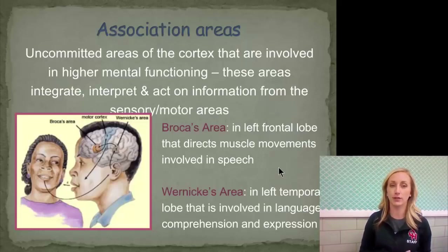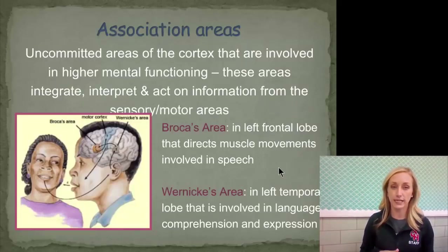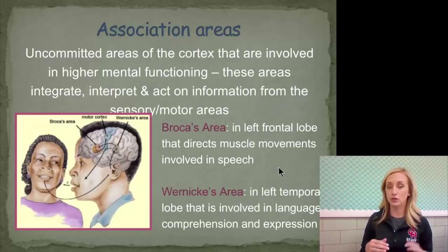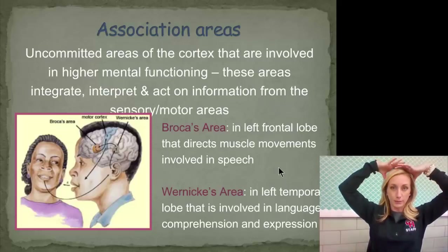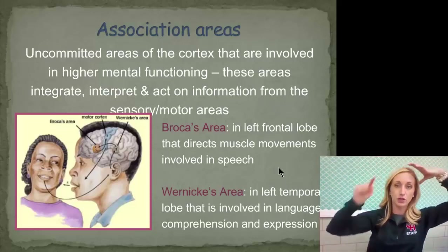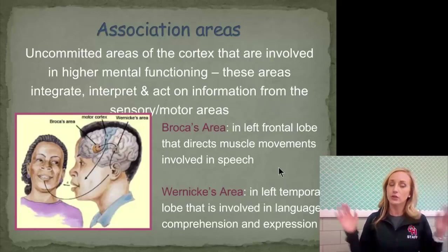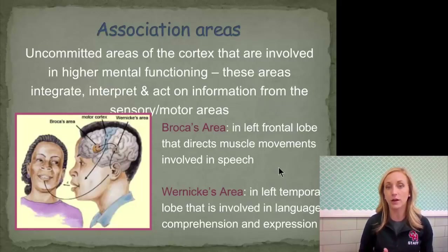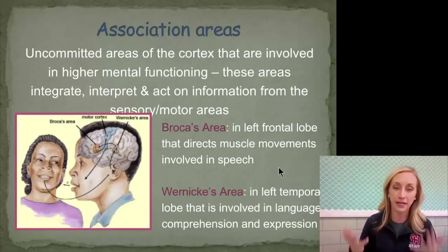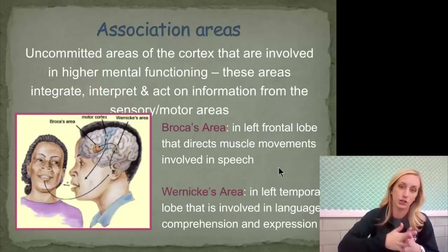Association areas are uncommitted areas of the cortex involved in higher mental functioning. Unlike the motor and sensory cortex — which are very specific and produce specific responses when stimulated — association areas integrate, interpret, and act on information from the sensory or motor areas. They handle much higher-order thinking, not just motor and sensory functioning.